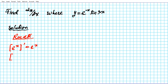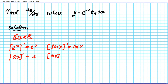The constant multiple rule: the derivative of ax is simply a. For trigonometric differentiation rules, the derivative of sine x is cosine x. We are also going to be making use of the product rule — the derivative of a product of two functions u times v is given by v·u prime plus u·v prime.